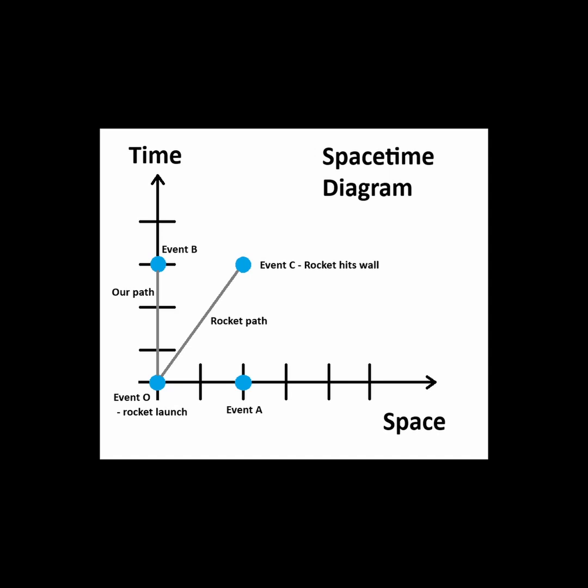Perhaps there is a brick wall a certain distance away from where we are standing and the rocket collides with that wall. Let's define that as event C.